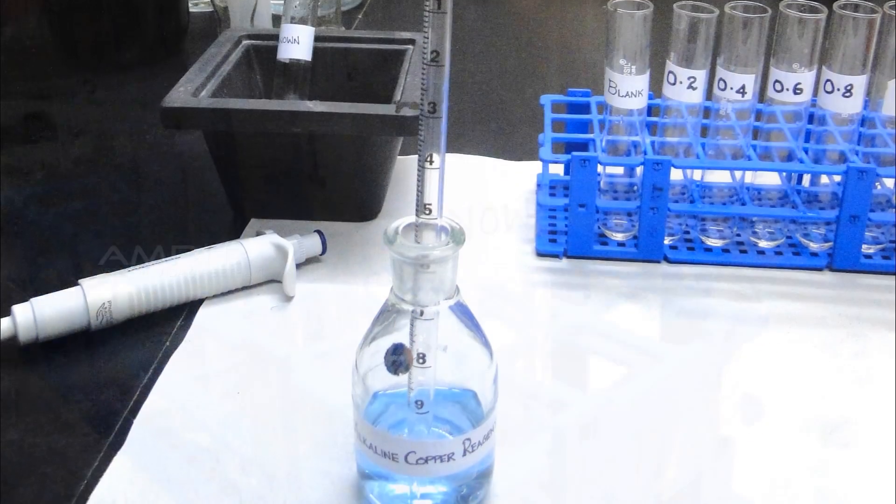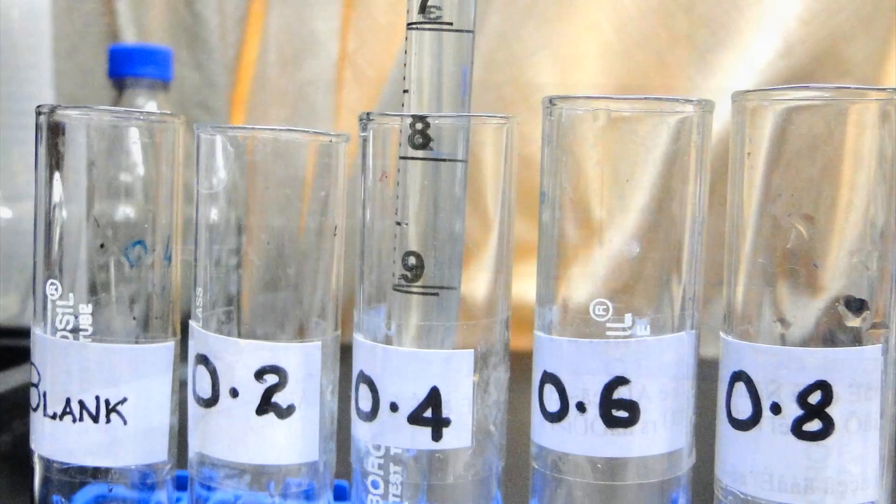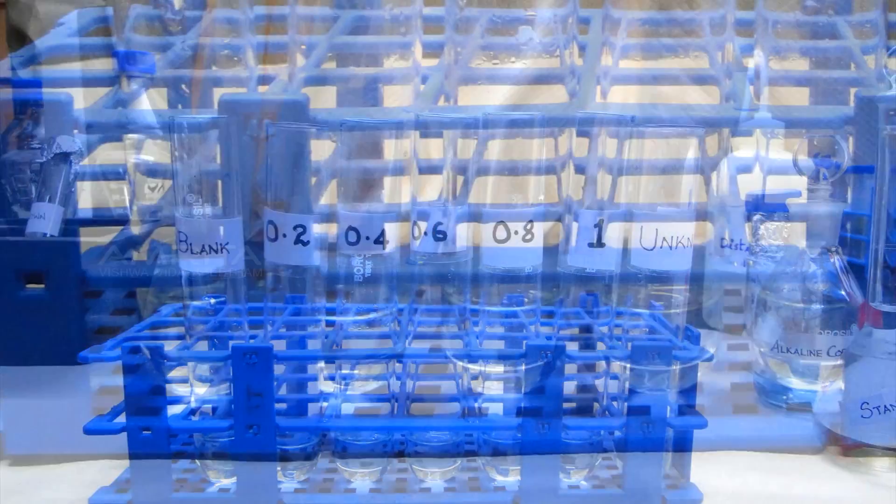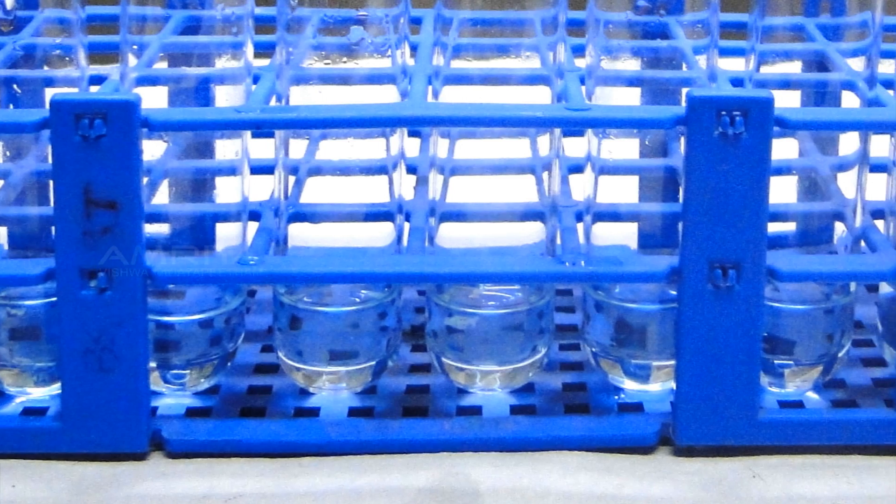Add 5ml of alkaline copper reagent to all the test tubes. Vortex and incubate for 10 minutes at room temperature. The solution in all the test tubes has turned blue in color.